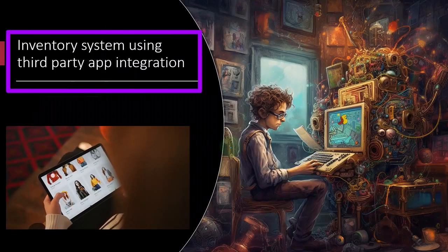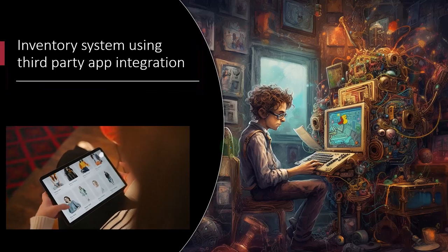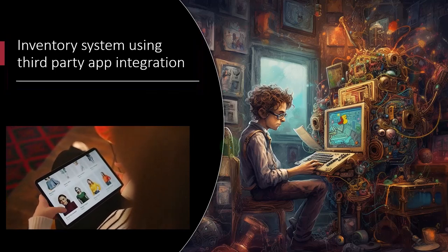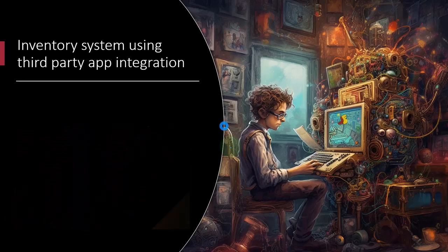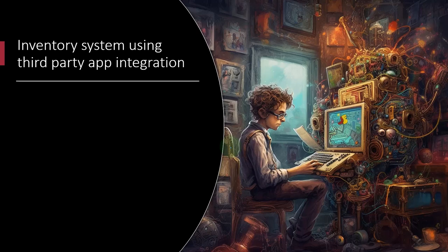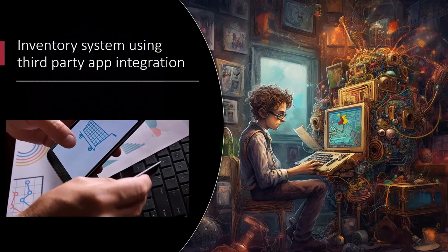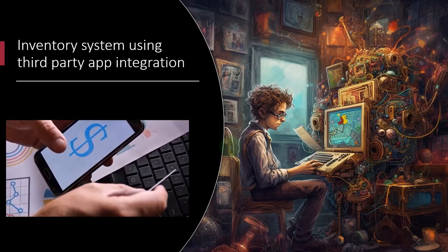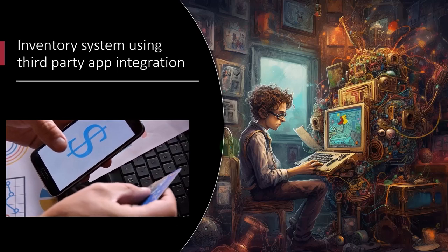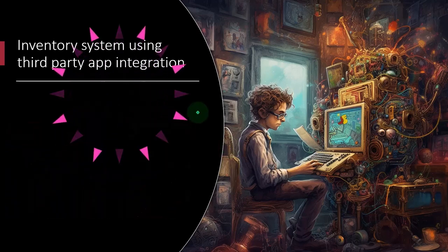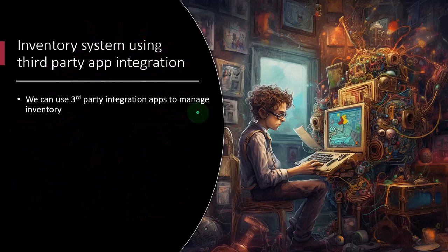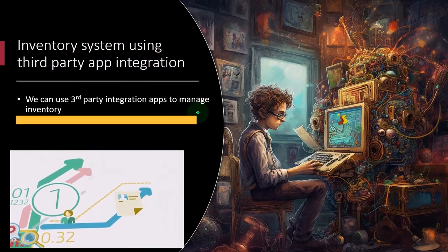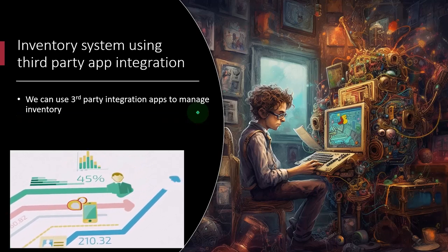The next method is using an inventory system via a third-party app or integration. So if you have a Shopify or Amazon store where you're facilitating sales, you're not going to try to pull all the inventory item by item into QuickBooks, because that will overload the system especially if you have a high volume of inventory. Instead, you can integrate third-party applications which are designed to handle inventory and are usually more sophisticated than QuickBooks for more complex inventory needs.